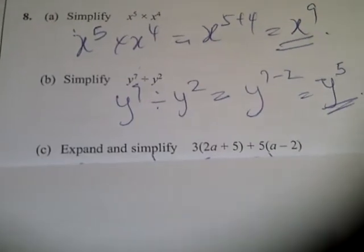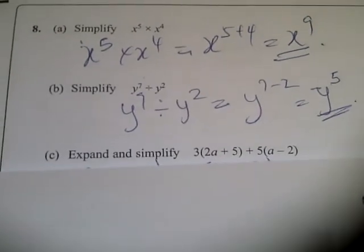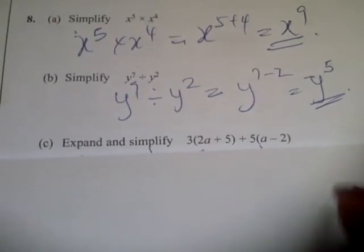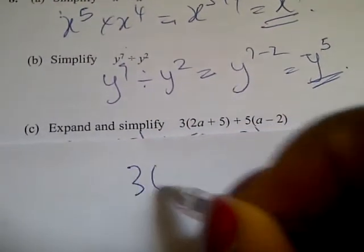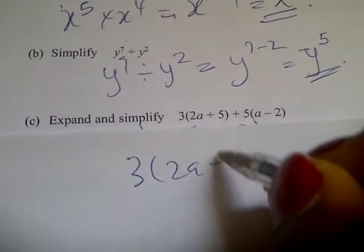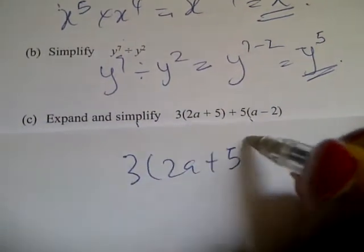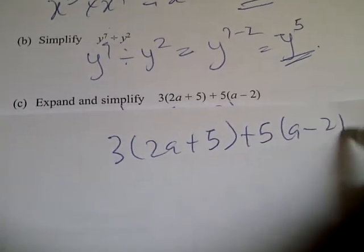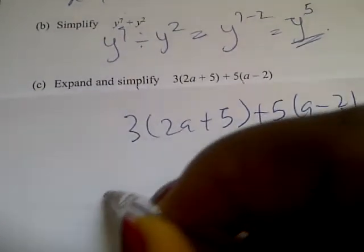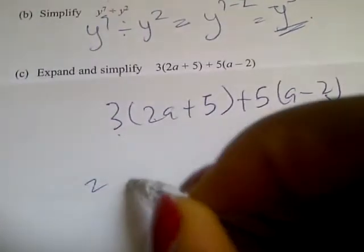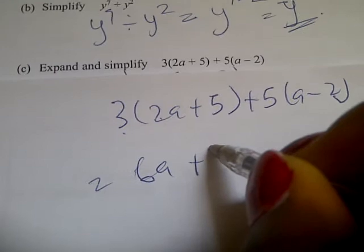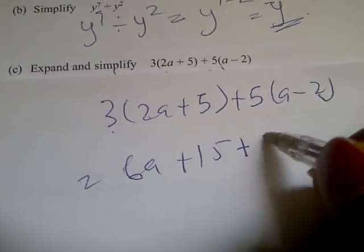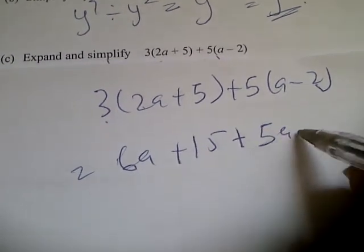8c says: simplify 3 into 2a plus 5, plus 5 into a minus 2. That is 3(2a + 5) + 5(a - 2), which gives 6a plus 15 plus 5a minus...